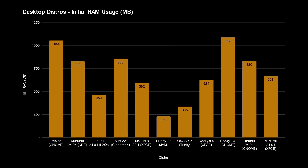Here's the initial RAM usage booted to a desktop — mouse working, terminal open. Debian uses about a gigabyte, Kubuntu 800 megabytes, Lubuntu 464 megabytes. The interesting low ones are Puppy Linux and Q4OS, both quite low. Rocky 9.4 with XFCE is pretty good at 624 megabytes. The desktop environment makes quite a difference: GNOME-based ones use around a gigabyte of RAM, XFCE is better, and LXQT is quite low.